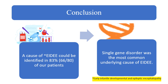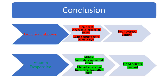To conclude, we could find a cause in 83% of our patients and single-gene disorder was the most common underlying cause of EIDEE. We also found that in the genetic and unknown groups, there were significant neurodevelopmental issues with poor seizure control, while in the vitamin-responsive group, especially if treated early, there was good seizure control with milder neurodevelopmental issues. Thank you.